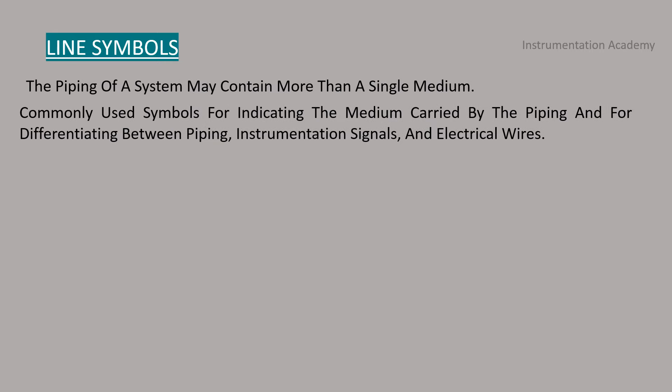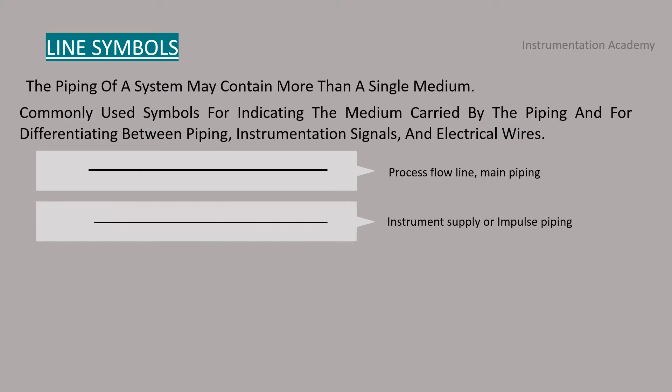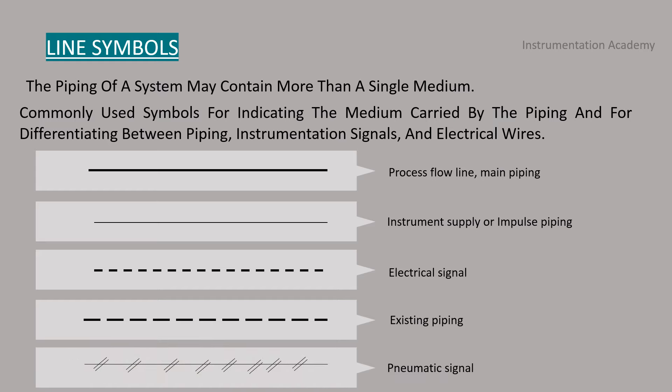The pipe system may contain more than a single medium. These are the symbols used for indicating the medium carried by the piping and for differentiating between piping, instrumentation signal and electrical wires. The most common line type is solid line, which is used to represent main piping. The instrument line or impulse piping is shown by a thin line. A line with short dashes represents electrical signals. A line with long dashes means the pipe is existing in the plant. A line with short double slanting lines represents pneumatic signal, which is the instrument area to control valve or devices.